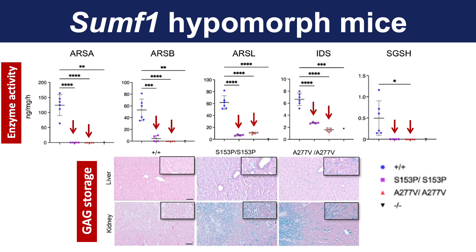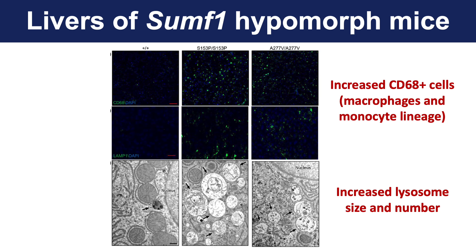We also had one control of a SUMF1 knockout mouse that has undetectable enzyme activity. These mice have accumulation of GAGs in different tissues, as expected. They also showed numerous accumulation of macrophages and monocyte cells, as shown by CD68 immunofluorescence. By electron microscopy, they were found to have increased lysosomes both in size and in numbers.